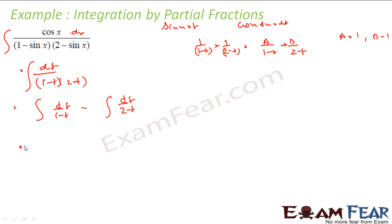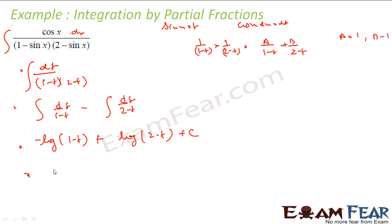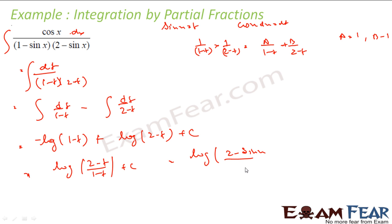This is nothing but log(1 - t) with derivative -1, minus log(2 - t) with derivative -1, plus constant. That simplifies to log((2 - t)/(1 - t)) plus constant. And since t was sin(x), the answer is log((2 - sin x)/(1 - sin x)) + C.